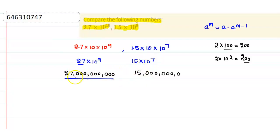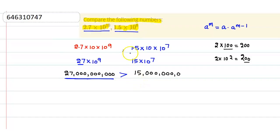That means this number is greater than this number. So basically, the number 2.7 into 10 to the power 10 is greater than 1.5 into 10 to the power 8. And the smaller number, it is obvious, will be 1.5 into 10 to the power 8. So this is all about comparing between these two numbers. Thank you.